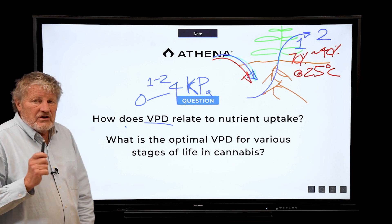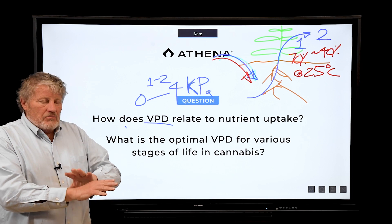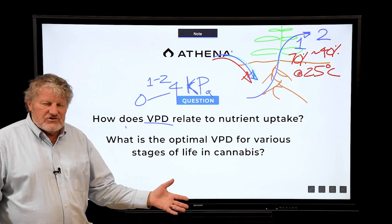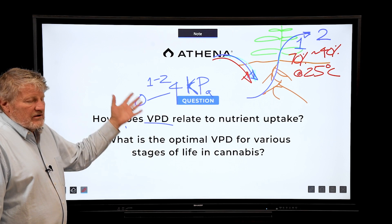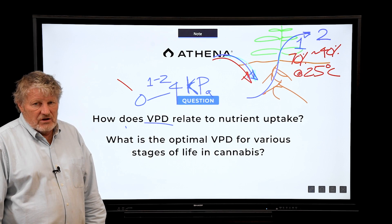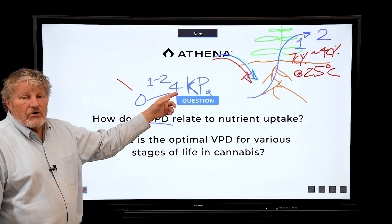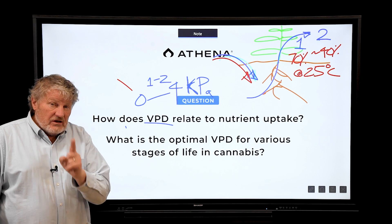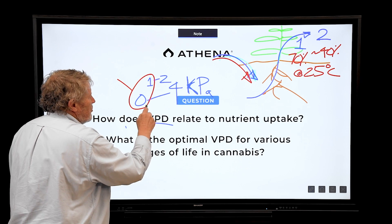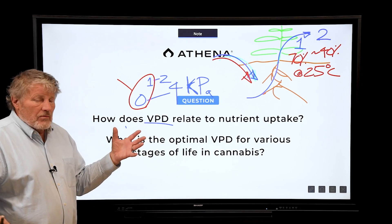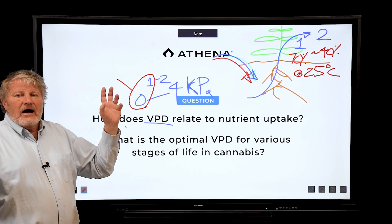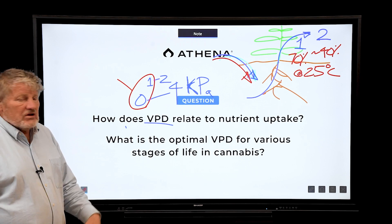What's the optimal VPD for various stages of the life cycle? People try to dial this in to an exact number, but it turns out that unlike something like pH, VPD is optimal over a very wide range. We go all the way to four in the field and it's fine. The key concern is disease — if VPDs are between zero and one and humidities are high, we get more disease. Botrytis is a big one, so we want to keep the VPD high enough to keep humidity low and disease out.